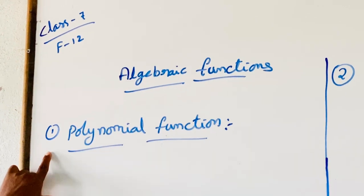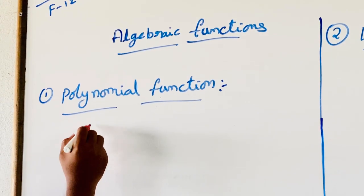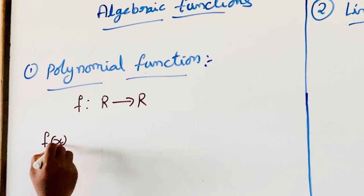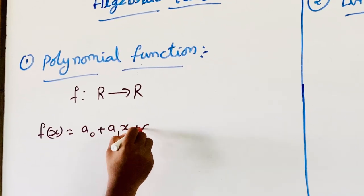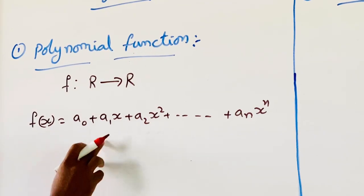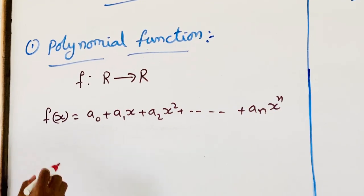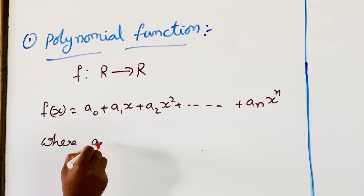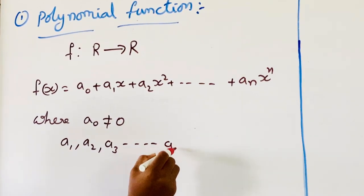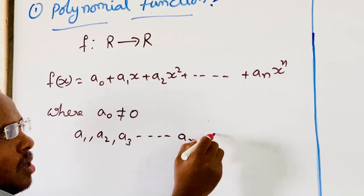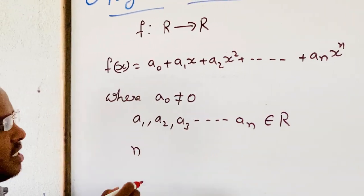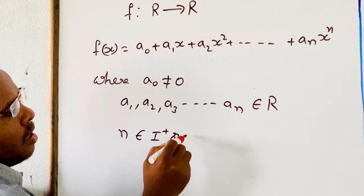In algebraic functions, the first one is the polynomial function. If f maps R to R, f of x is equal to a0 plus a1·x plus a2·x squared plus and so on plus an·x to the power n. It is a polynomial function of degree n, where a0 is not equal to 0; a1, a2, a3, and so on, an are real constants, that means they belong to R. n is a non-negative integer, that means n belongs to the whole numbers.